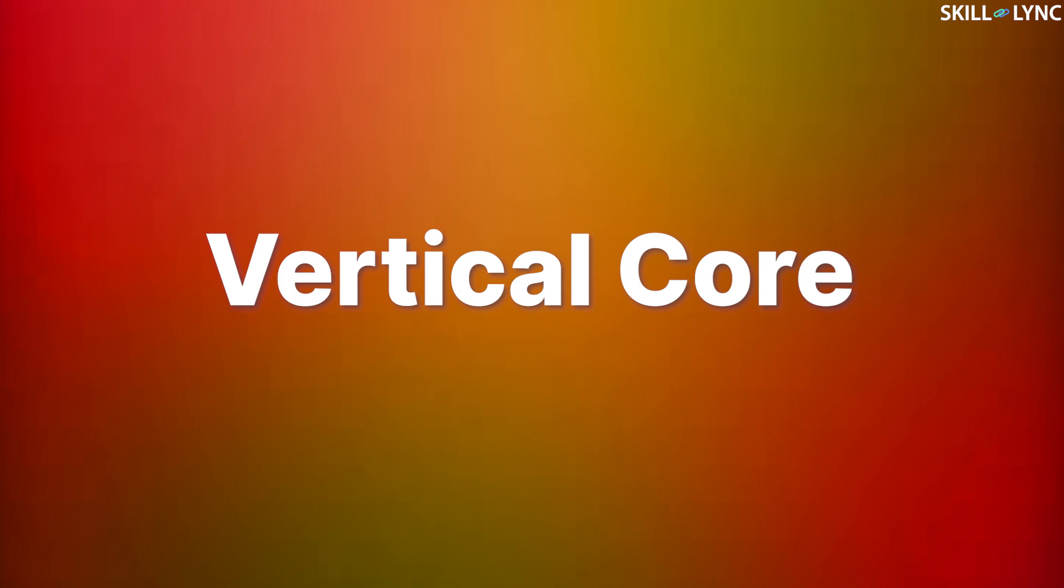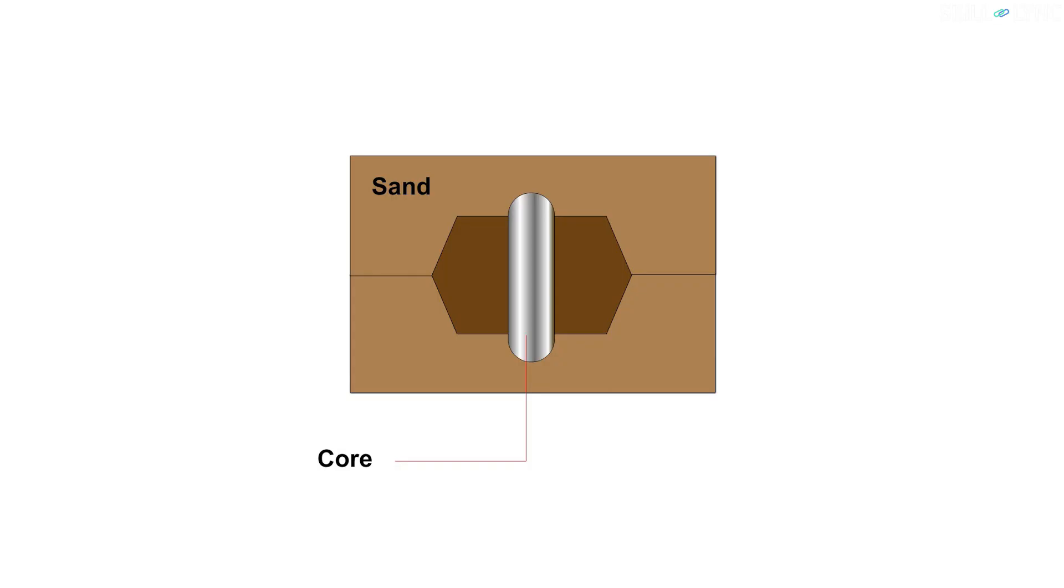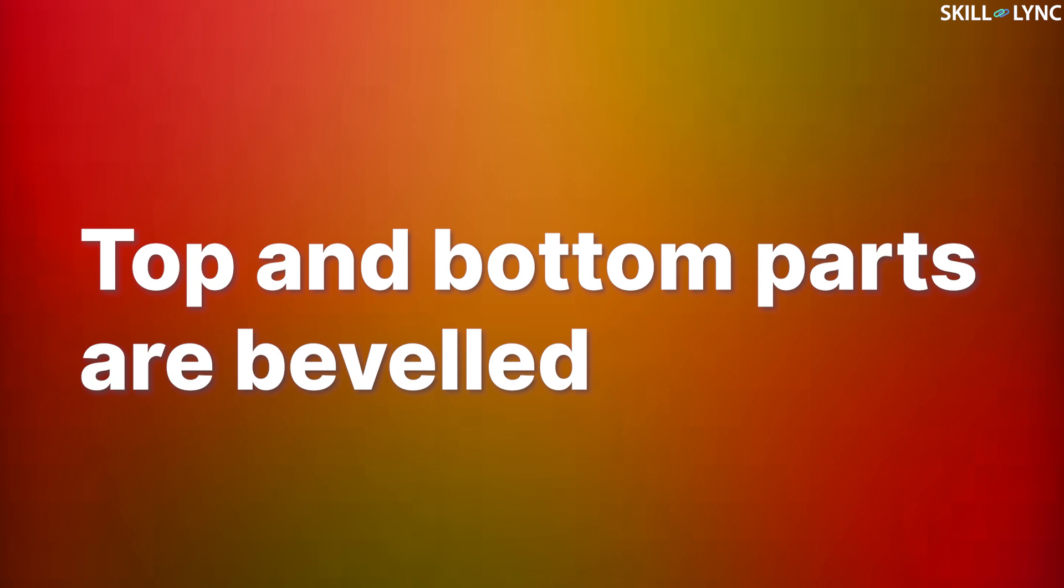Our second type of core is the vertical core. Yes, just like you expected, vertical cores are positioned vertically inside the mold cavity. This type of core has a portion of it lying in the sand, as you can see in the image. To facilitate the placement of a vertical core, its top and bottom part are beveled.